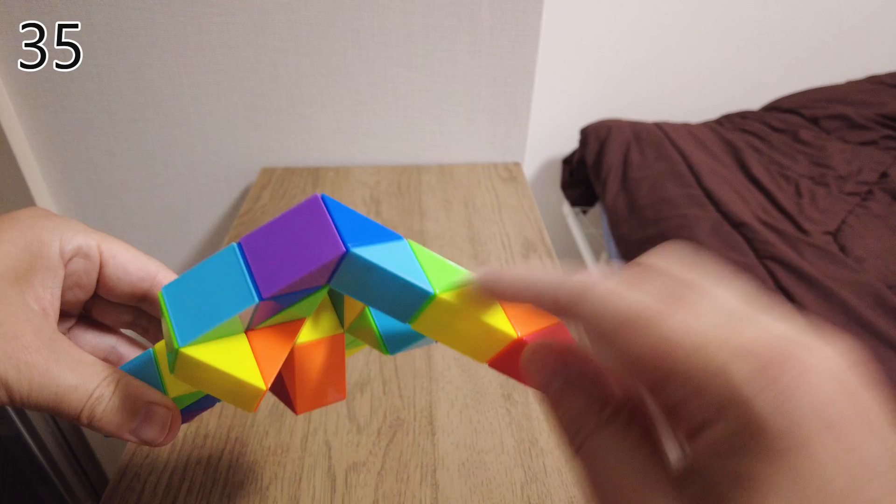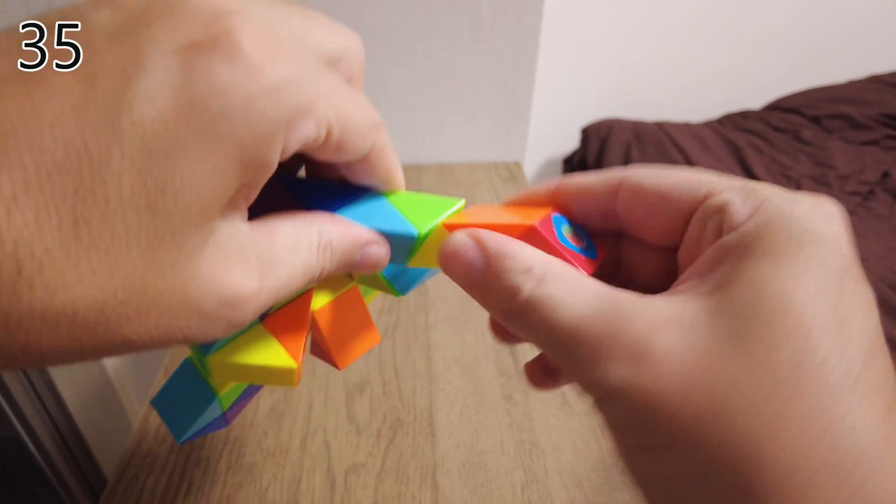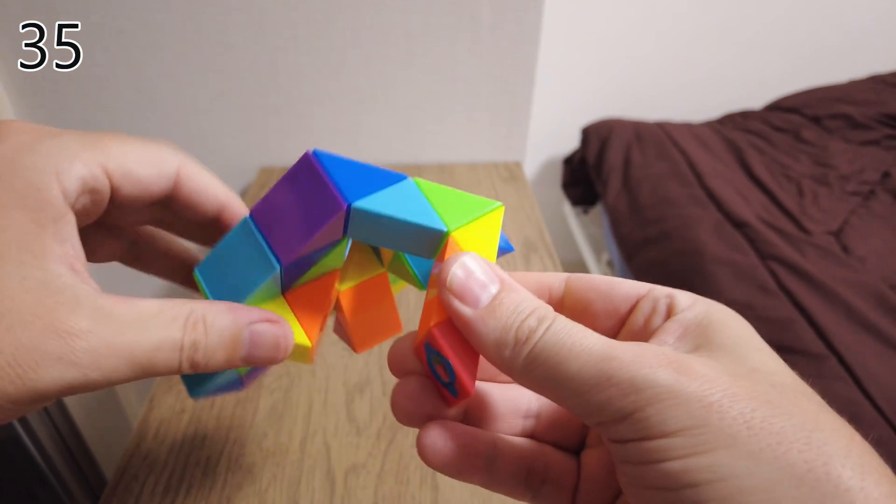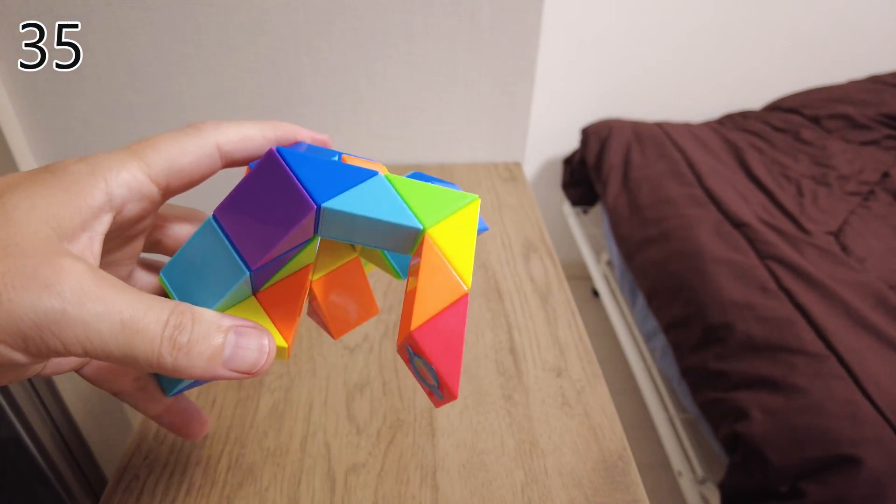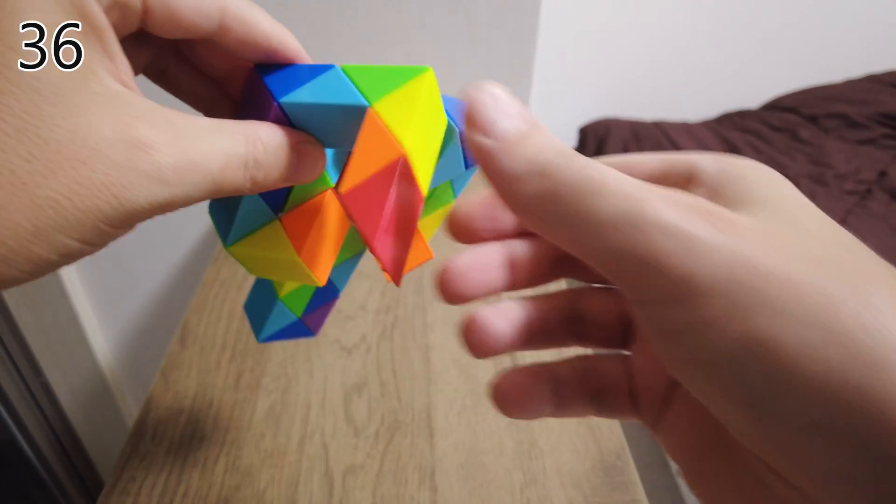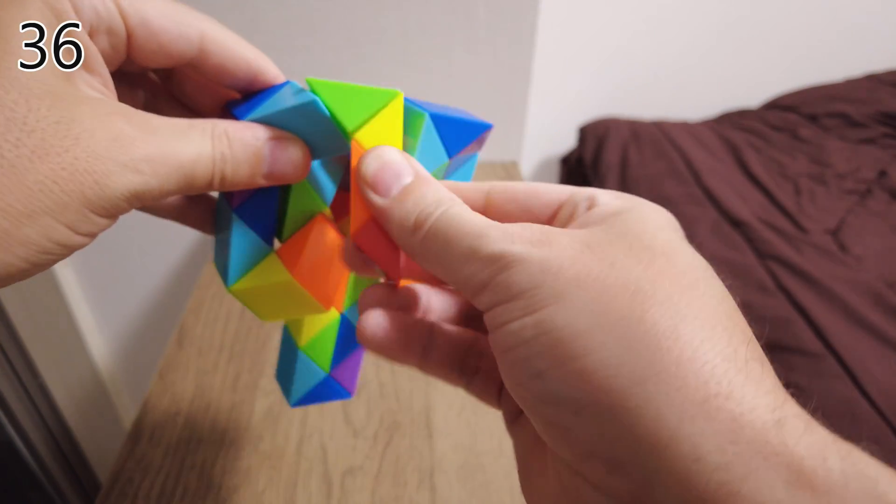One triangle, and we bend here, two clicks. One, two. Now here, rotate it, so it goes in there.